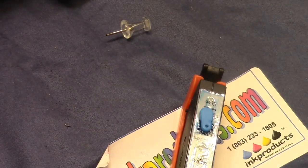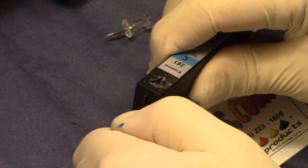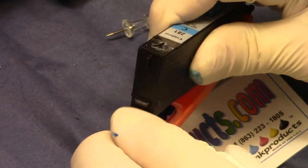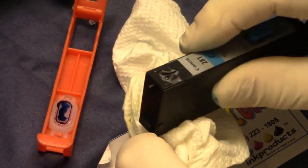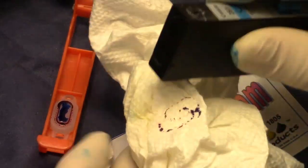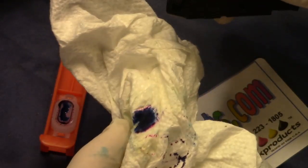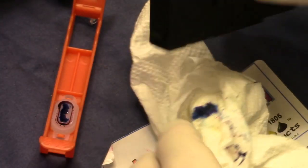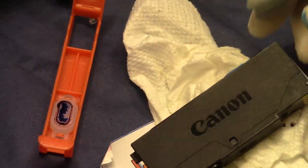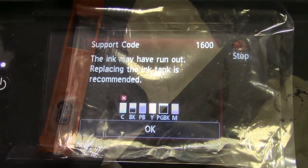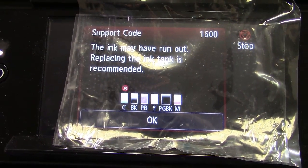I always have paper towel handy. I'm kind of rushing for the video, but I take it out of the clip and blot it a little bit just in case there's ink dripping - I don't want that. Then put it in. You're not going to be able to reset the chip but that's okay. It's showing support code 16 - ink may have run out.